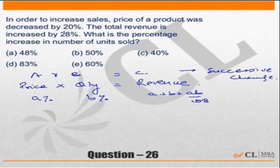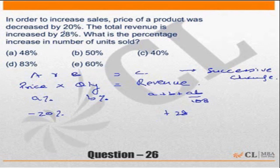Here, the price of the product was decreased by 20%, so this is minus 20%. Revenue increased by 28%, so this becomes plus 28%. You could apply this formula to get the answer — that is why we are doing the question.